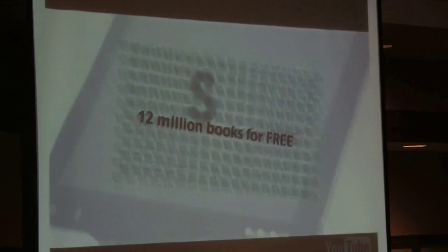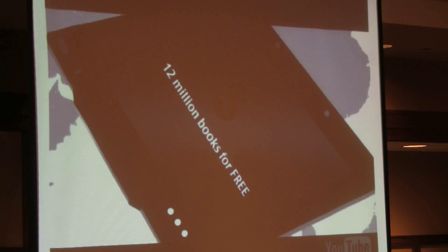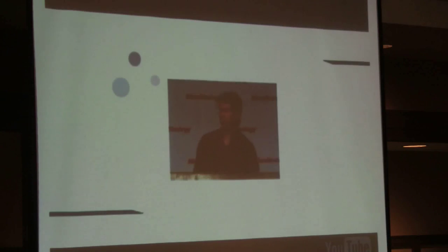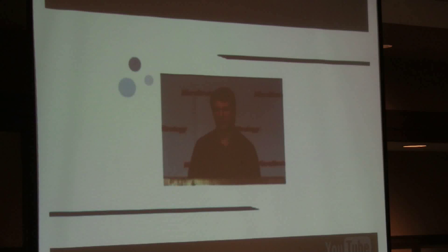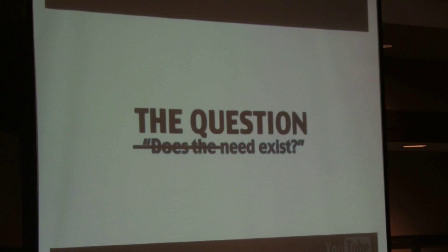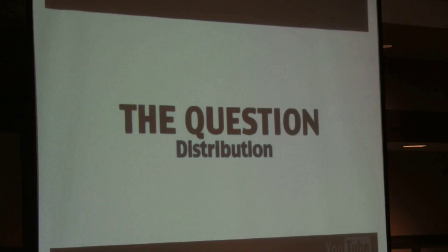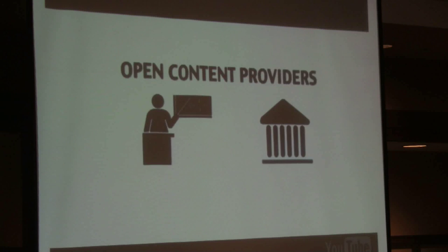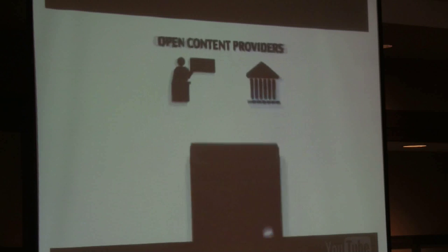If I can actually provide 12 million books for free to someone with an iPad, then that means I can provide 12 million books to someone for free in the middle of the jungle of Burma. If I can automate education or project it, then maybe people that don't live in the first world can get just as educated as people that do. The question is no longer does the need exist. The question is content. The question is form. The question is distribution.